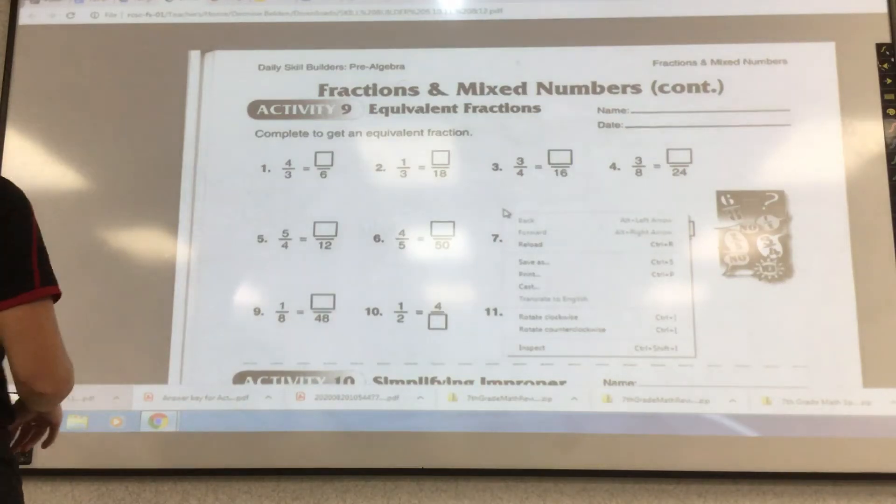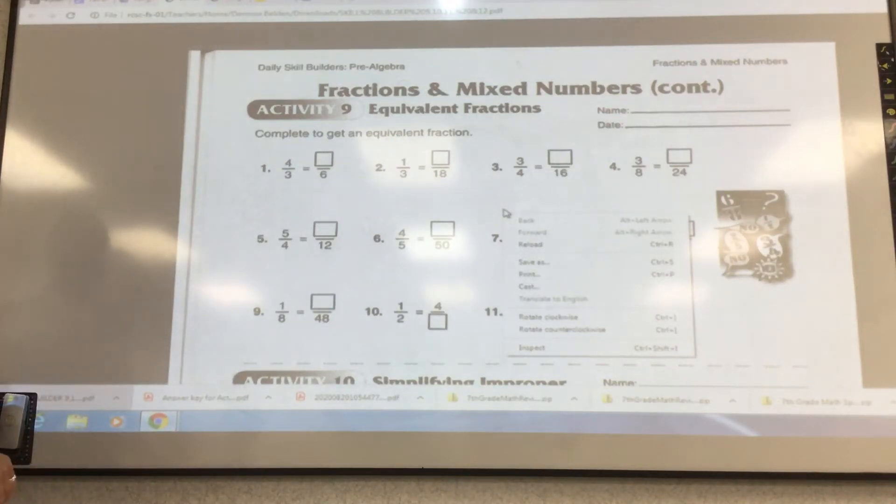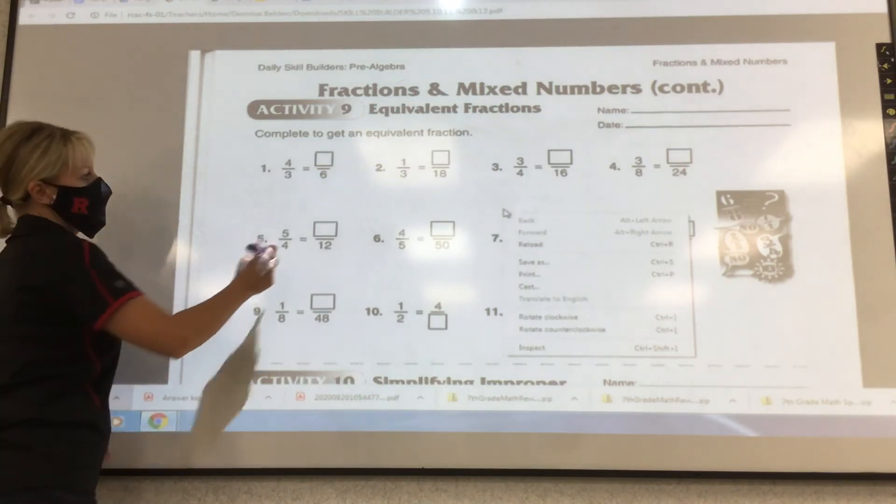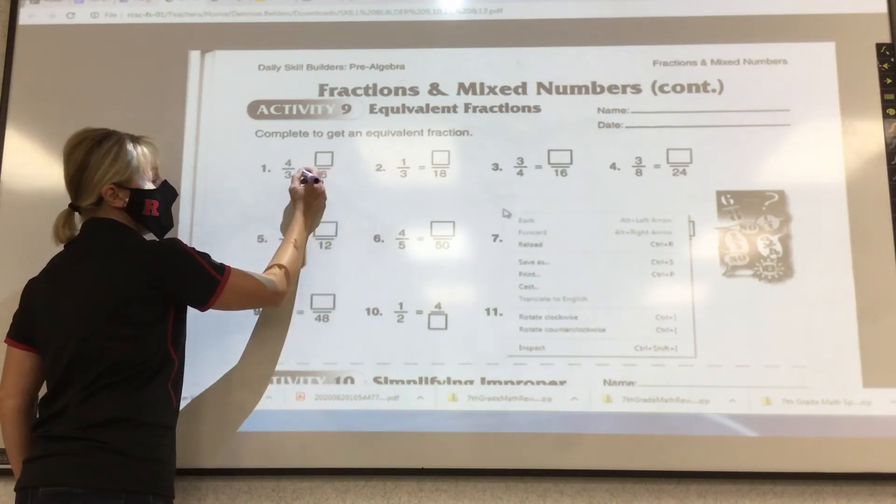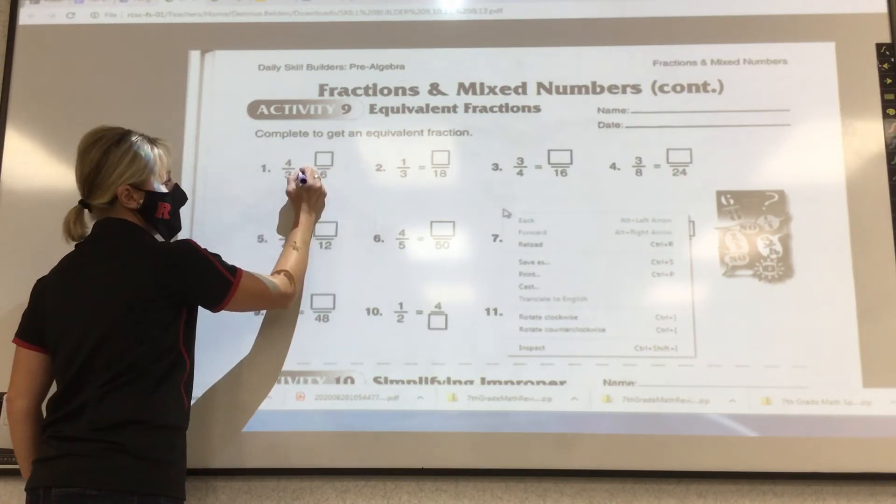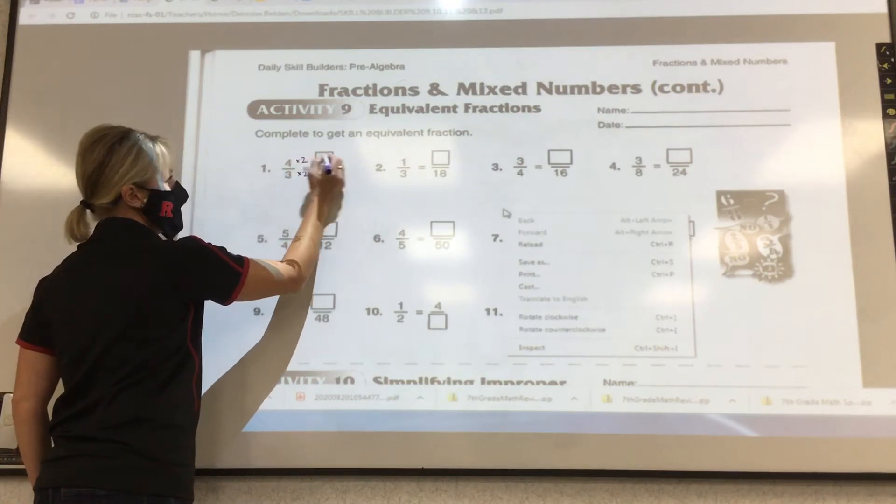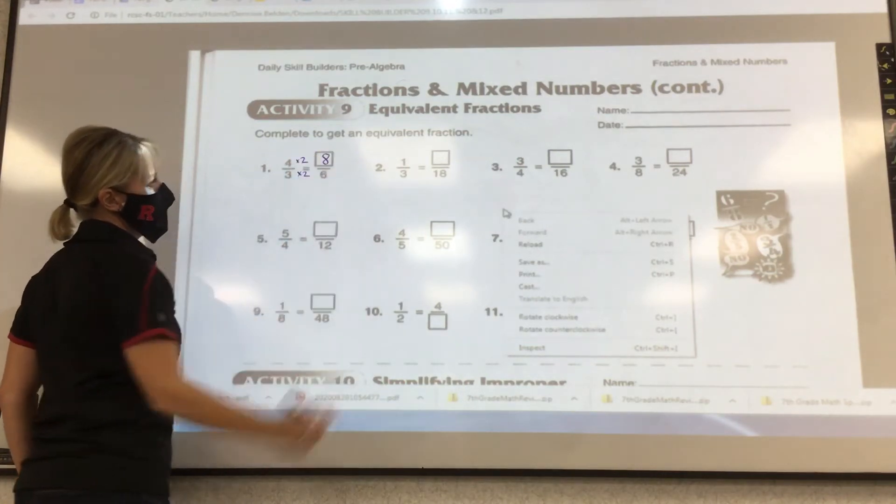On fractions and mixed numbers, it says to complete to get an equivalent fraction. So you have to ask yourself, how do I get from 3 to 6? And I need to see this on your paper. I need to see times 2, times 2, and then that would be 8.